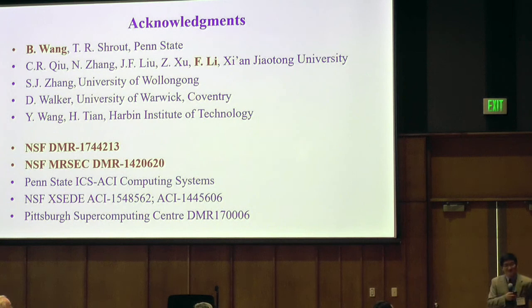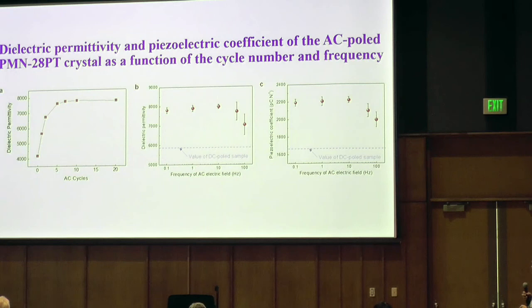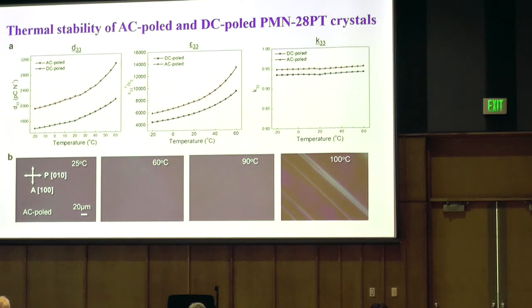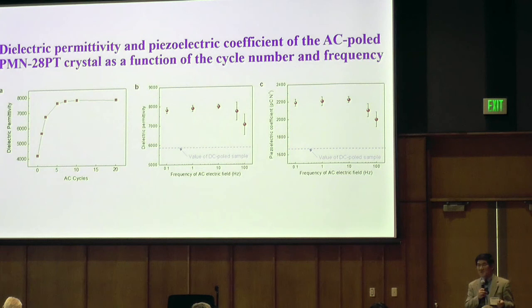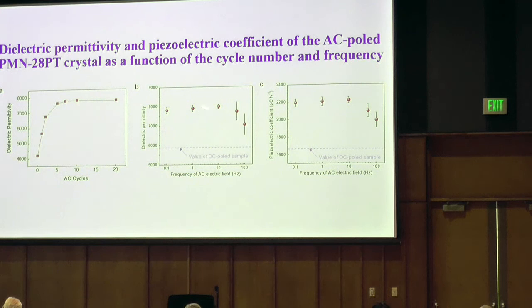Q: I was wondering about the temperature dependence of AC versus DC polling. A: You want to poll below the rhombohedral-to-tetragonal transition temperature. If you go to the transition temperature, you dramatically reduce the piezoelectricity. Also, if you cycle too fast — above about 50 Hz is the practical maximum; 100 Hz already starts decreasing — the domains do not have time to nucleate and rearrange. You can go as low as 0.1 Hz and just do 5–10 cycles to get the enhancement.